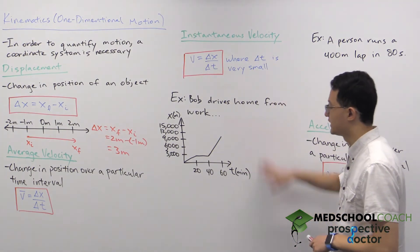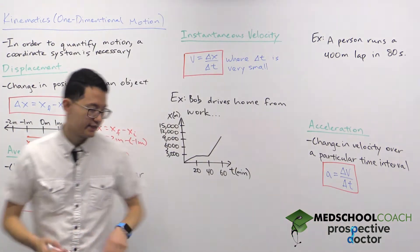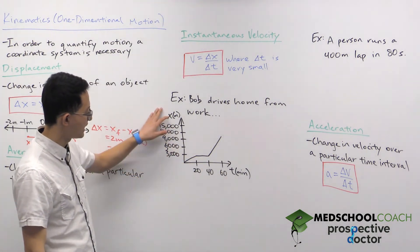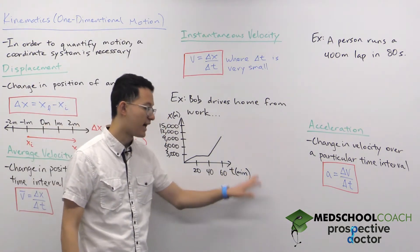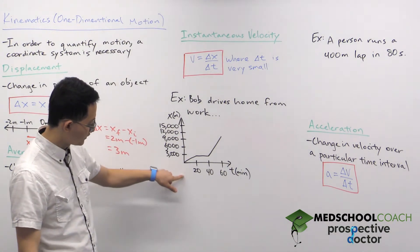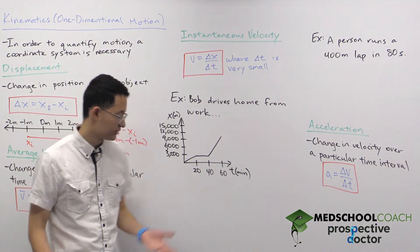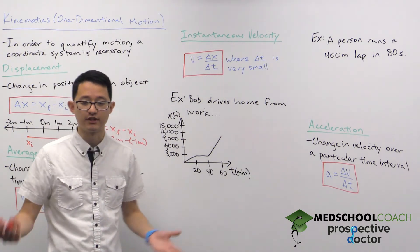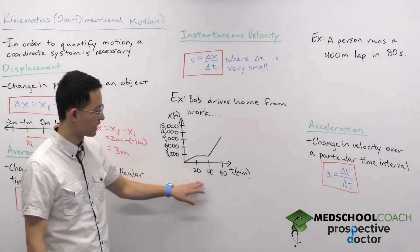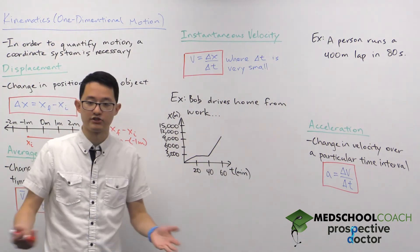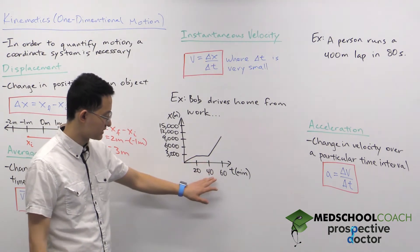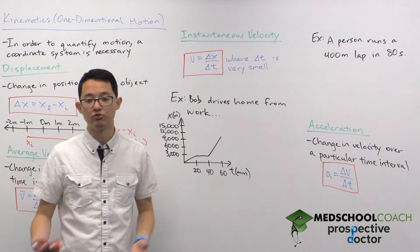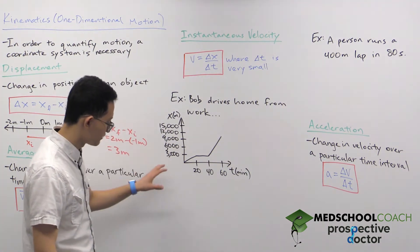We can best see the differences between these two terms with an example. Bob has just finished work and is driving home. We represent the travel with a position-time graph where X (position) is on the Y-axis and T (time) is on the X-axis. In the first 20 minutes Bob traveled 3,000 meters — pretty slow due to peak traffic. After 20 minutes he stops to grab a quick dinner for 20 minutes, so his position isn't changing. Then, with traffic cleared, he travels the remaining distance home in another 20 minutes.